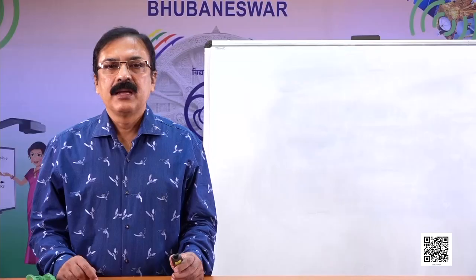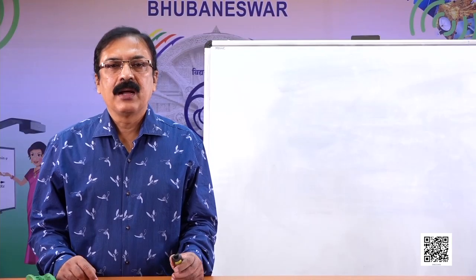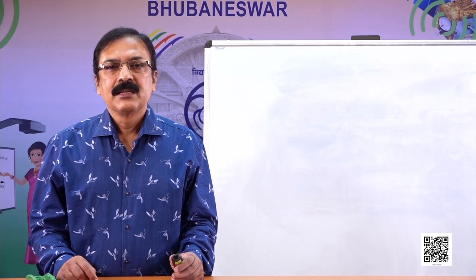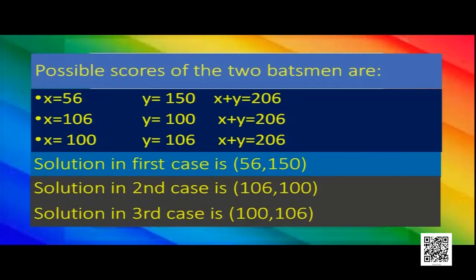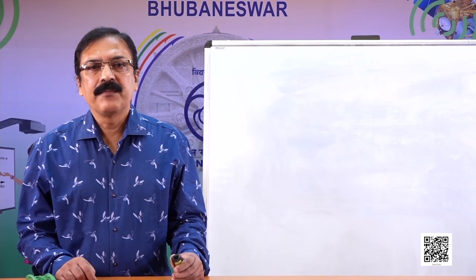Carefully observe the representation of the solutions: (56, 150), (106, 100), and (100, 106). In the last two cases, the values are the same but the position is changed, and that value also satisfies the equation. But is this true for every equation? Let's see an example.